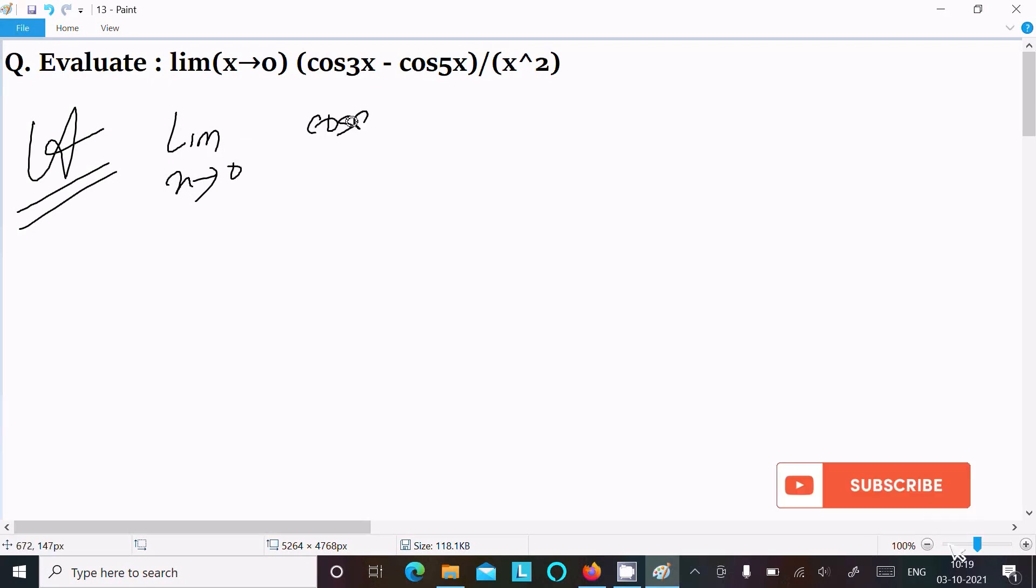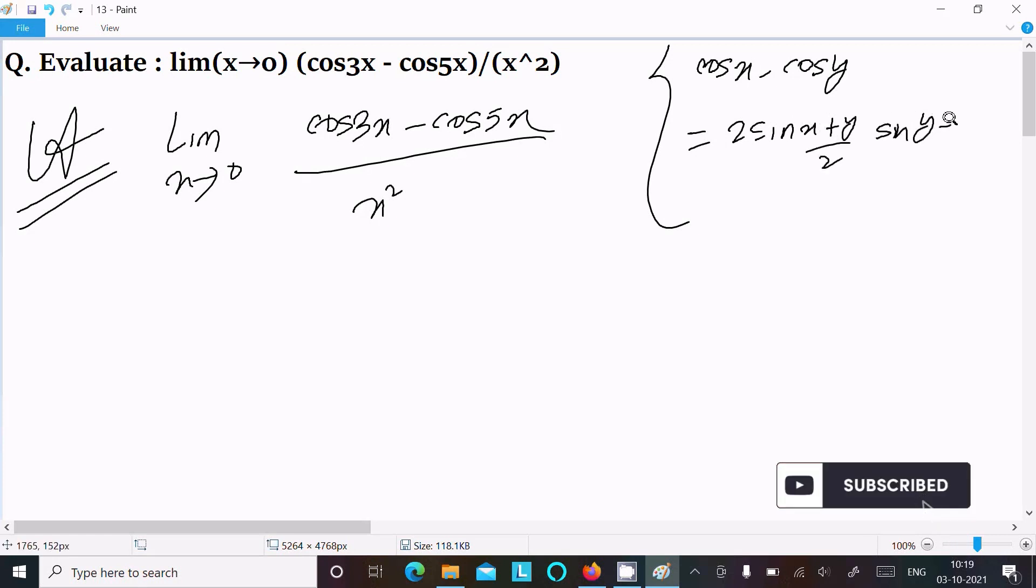And here cos 3x minus cos 5x divided by x squared. We can easily achieve the output if I use this formula: cos x minus cos y equals 2 sin (x plus y)/2 into sin (y minus x)/2.